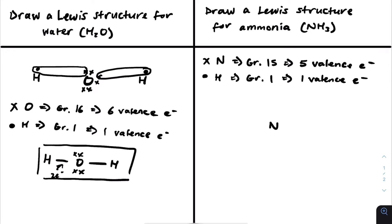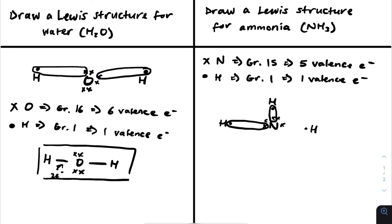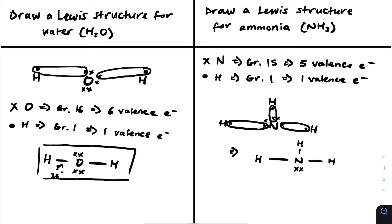We're going to place nitrogen in the center with hydrogens around it, because hydrogen can only form one bond. We'll draw the electrons in, placing them closer to the hydrogens for clarity. Nitrogen has five electrons. We can then pair up the bonds. What we're left with is a structure where nitrogen has two remaining valence electrons as a lone pair. This is how you draw ammonia.